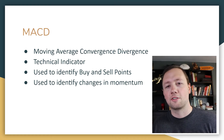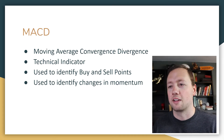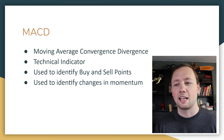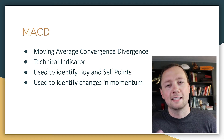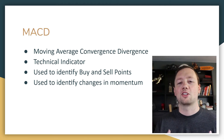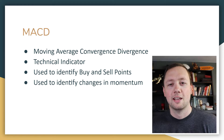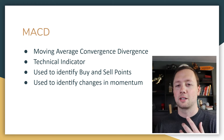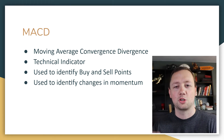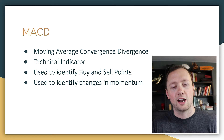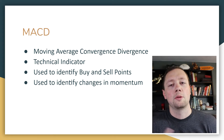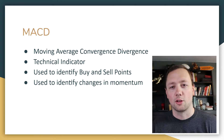MACD stands for Moving Average Convergence Divergence. It is a technical indicator that is used to identify buy and sell points by looking at changes in momentum. We're basically putting together a formula that calculates a visual display to help us identify changes in momentum and where we may want to buy and sell the stock.